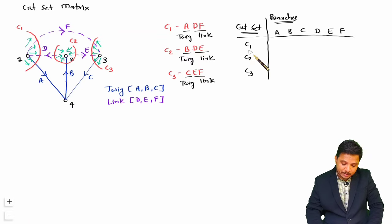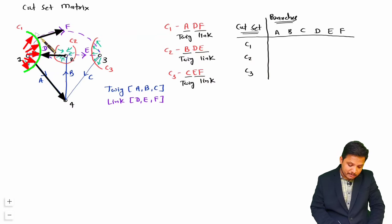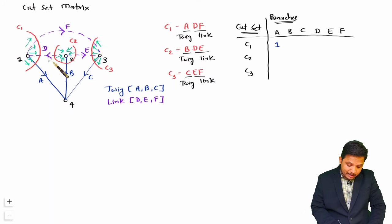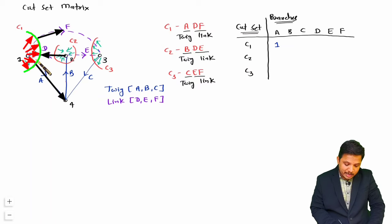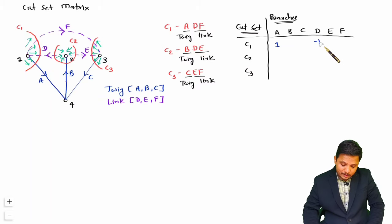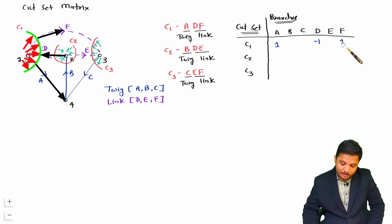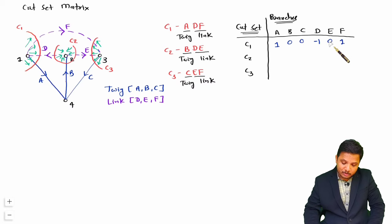For cut set C1: A is in the direction of the cut set so A gets plus 1; D is going inside C1 so D gets minus 1; F is in the direction of the cut set so F gets plus 1; the rest are not connected so those are 0.